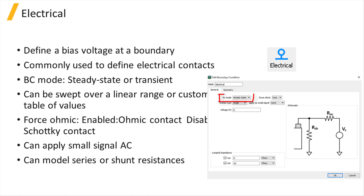The BC mode can be steady-state or transient, keeping in mind that a transient definition is only valid in the case of a transient simulation. In the steady-state mode, the voltage can remain constant by choosing the sweep type to be single, or can be swept linearly over a range of values by selecting the range option. In addition, it is possible to define a table of custom voltage values to sweep over when the sweep type is set to value.